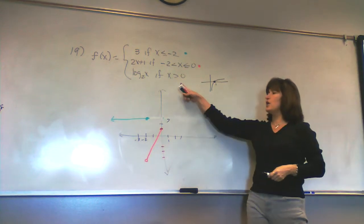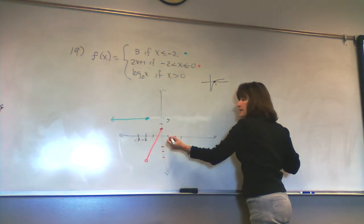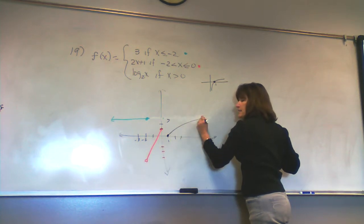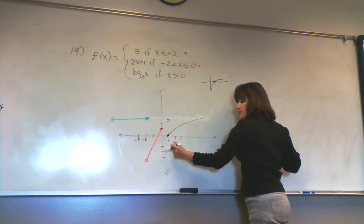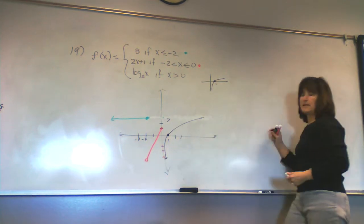Okay? So, my graph is going to look like this. Log base 2 of x goes through 1, 0, and roughly does this. And what does it do over here? Well, it goes close to there as an asymptote.